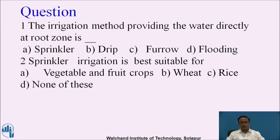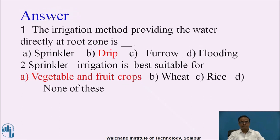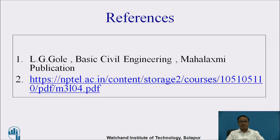Students are asked to pause the video and answer the questions provided. The answers are: the irrigation method that provides water directly at the root zone is drip irrigation, because sprinkler irrigation sprays water rather than delivering it directly to the root zone, and flooding is also not applicable for root-zone delivery. The second answer confirms that sprinkler irrigation is best suitable for vegetable and fruit crops. These are the references used for the creation of this video.